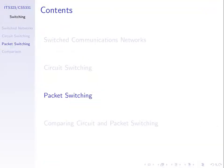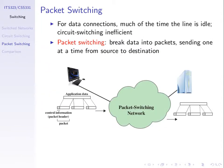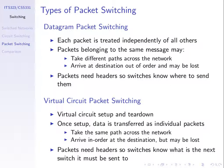The internet today is built upon packet switching, because many applications have the nature of sending varying amounts of data over time — sometimes a lot, sometimes very little. There are two types of packet switching: datagram packet switching and virtual circuit packet switching.